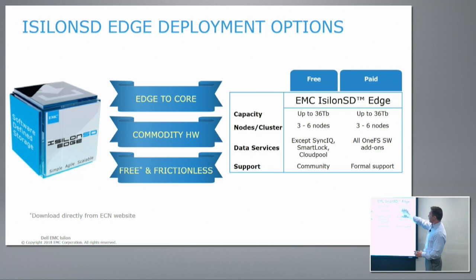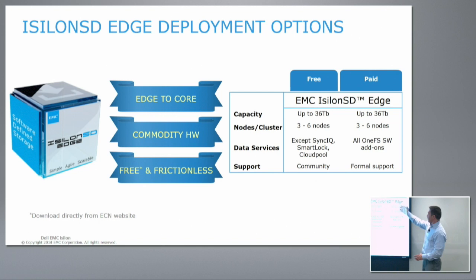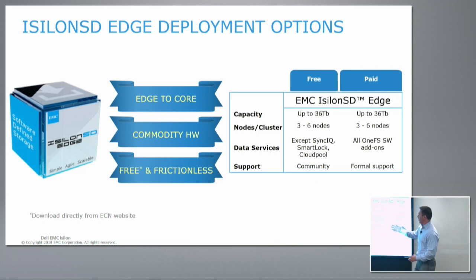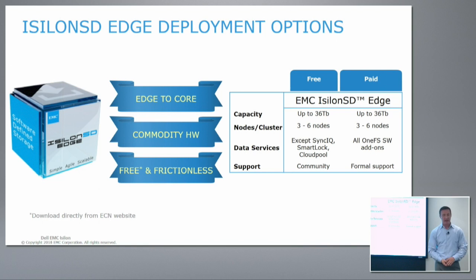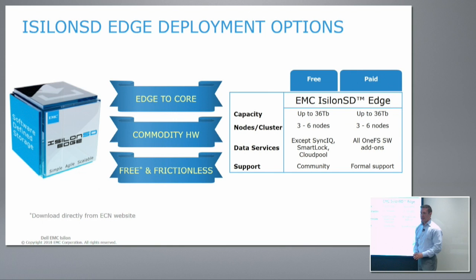It's very inexpensive. The intent is not to drive a lot of revenue around the SD Edge or the software version of our product — the intent is to make sure it's ubiquitous, driving more and more data into our core. So it's 36 terabytes up to six nodes. The paid version has formal support, whereas the free version lets you go to our community site and ask questions, where users and support staff can help each other. There is a free option if you want to fire up an Isilon cluster on laptops at home, with some JBOD or white box servers, downloaded directly from the Dell EMC pages.